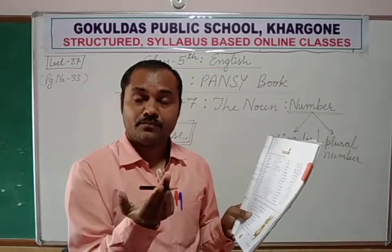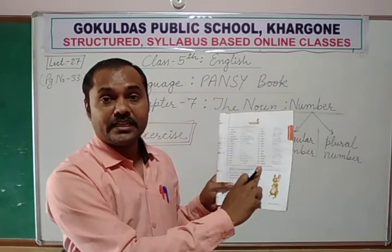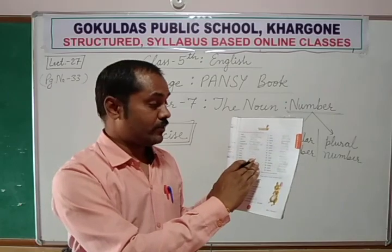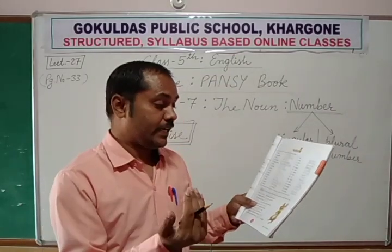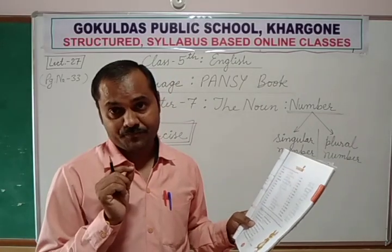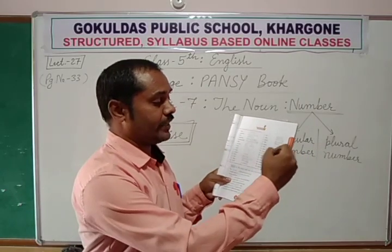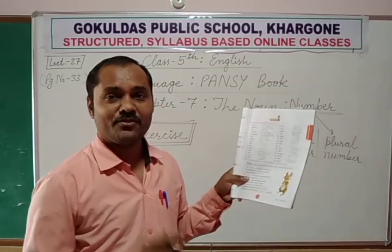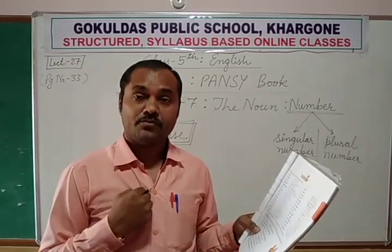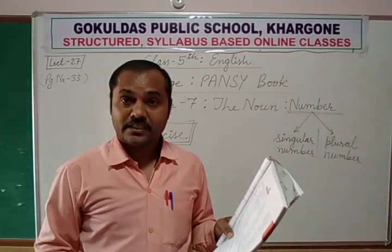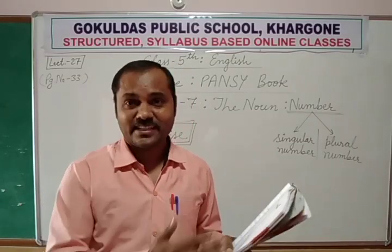If your answer is wrong — for example, a spelling mistake — mark it wrong. There are 30 nouns provided for which you have to write the plural forms. If you have done 25 correct and 5 wrong, give yourself 25 out of 30. Then click a photo of the exercise and send it to me on my WhatsApp number.